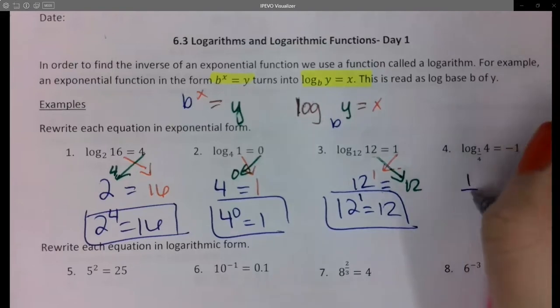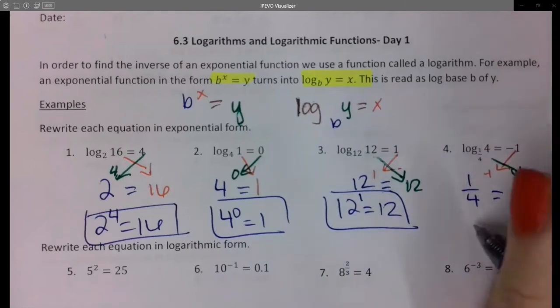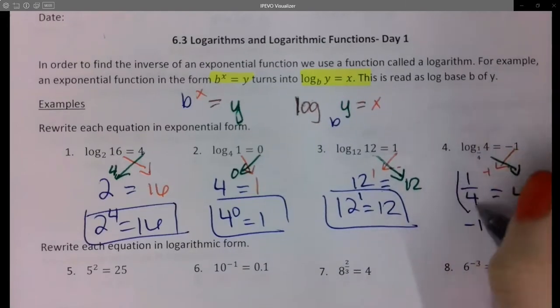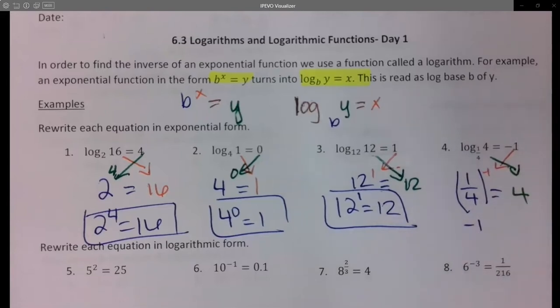Okay, over here I have a base of 1/4. Negative 1 needs to be my exponent. 4 is my answer. So for this one I want the 1/4 in parentheses so I know that the exponent applies to it all.